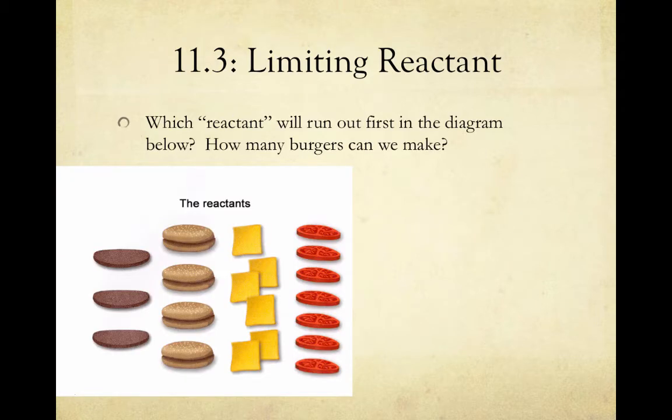Let's start with a non-chemistry example. Consider the reactants or ingredients below. We want to use these ingredients to make a cheeseburger. Try to determine which of these reactants or ingredients will run out first, and therefore, how many burgers you will be able to make.